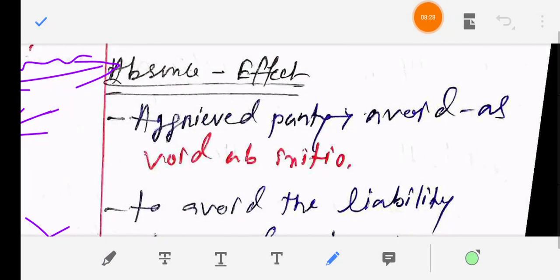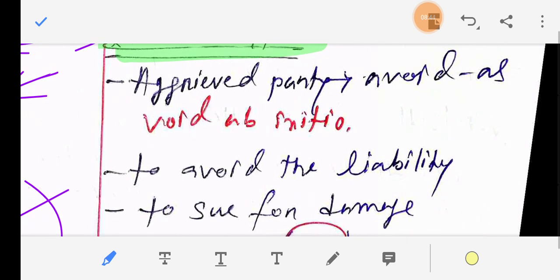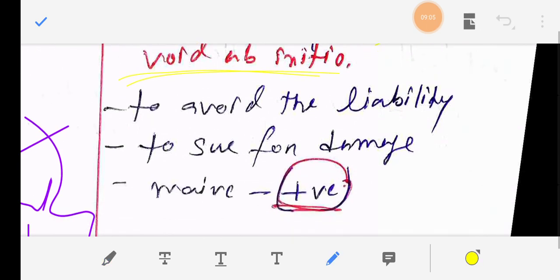Finally, absence of facts. If the policyholder does not disclose facts, conceals, misrepresents, uses half-truth or silence, what is the effect? The aggrieved party, because of the non-disclosure of facts, if prejudicially affected, the aggrieved party can avoid the contract as void ab initio - avoid from the very beginning. Second, to avoid the liability. If the facts are not disclosed, there is no liability. The insurance company can avoid liability ab initio.